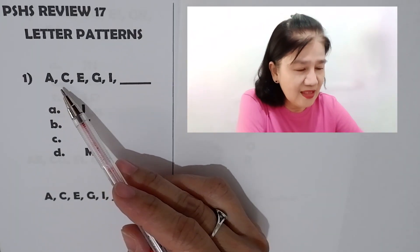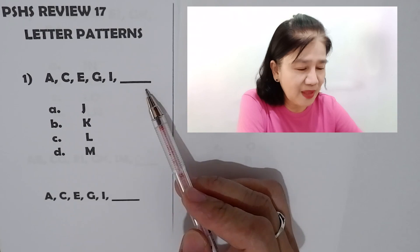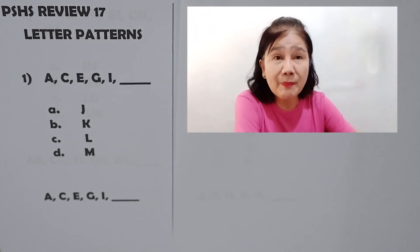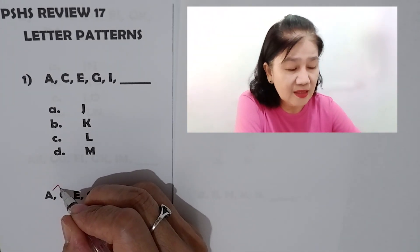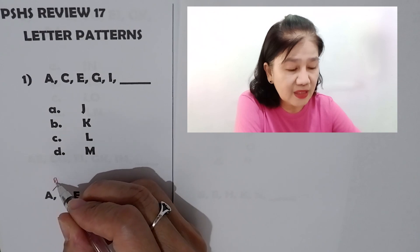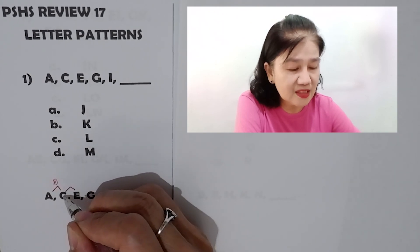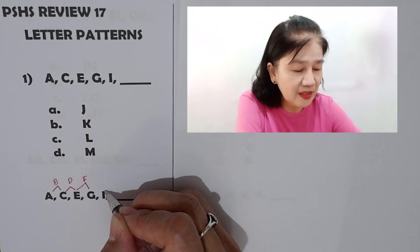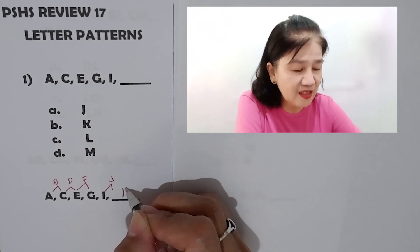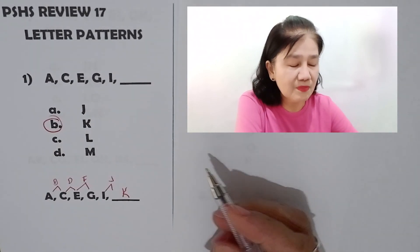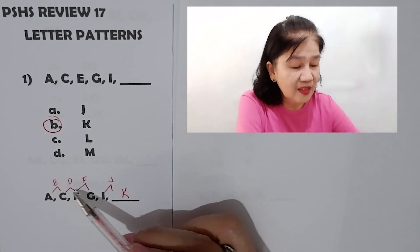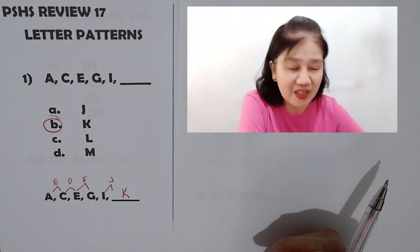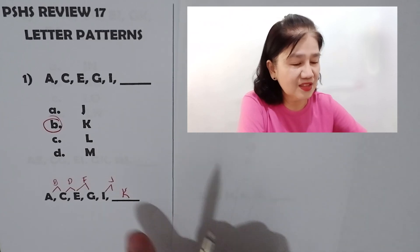Okay, number one: A C E G I blank. So we have a letter sequence. All you have to do is look for a pattern. Try to see: A B, then C D, then E F G — you're skipping one letter each time. There are already three letters here and you were able to determine the pattern. Remember you're under time pressure in answering, so the answer is letter B: K.